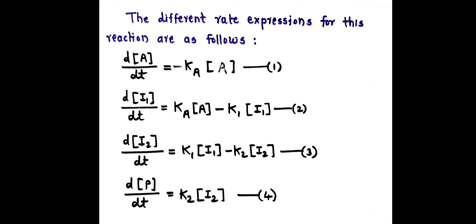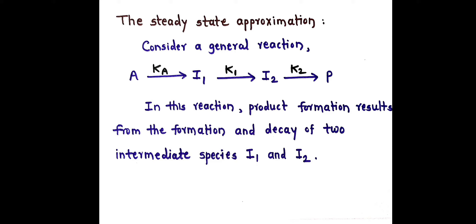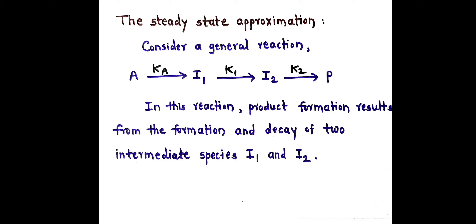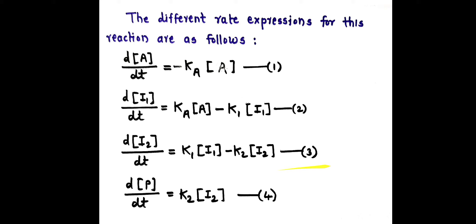For I2, dI2/dt = K1[I1] - K2[I2]. I2 is formed from I1, therefore here comes K1[I1], and K2 is the rate constant for the next reaction, therefore minus K2[I2]. For product P, which is formed from I2, it is K2[I2]. These four are the different rate expressions for this reaction.